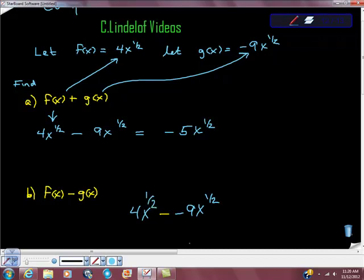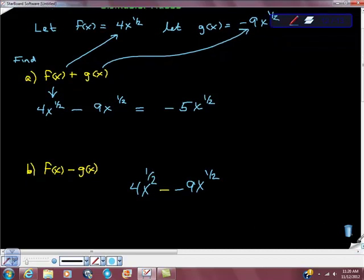This should be to the 1 half power. Sorry about that. Then I'm going to do the same thing as I did last time. A negative times a negative is a positive, so I'm going to turn this into a positive and just add these two numbers together to get 13x to the 1 half power.